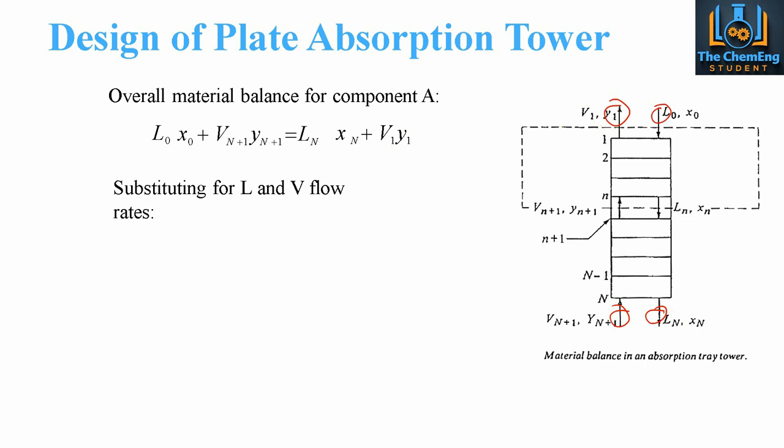Now if we substitute in the equations that we know for L and V in terms of the inert, then what we end up with is something that looks like this. So we are replacing the L0, the Vn+1, Ln, and V1 with the corresponding equations that we've seen in the previous slide. So here we have L' is equal to X0 over 1 minus X0, V', Yn+1, 1 minus Yn+1, and so on.